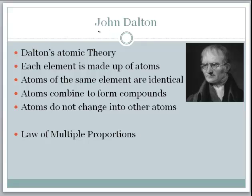Lavoisier's work then led to John Dalton's work. Dalton did a number of things and we'll mention his name a few times throughout the year, but right now we're focusing on Dalton's atomic theory — his explanation of how atoms behave. There are four main parts, paraphrased in the bullets. Basically, Dalton said every element is made up of atoms — carbon atoms, aluminum atoms, hydrogen atoms, etc.